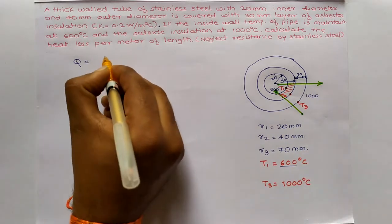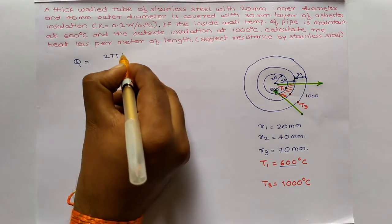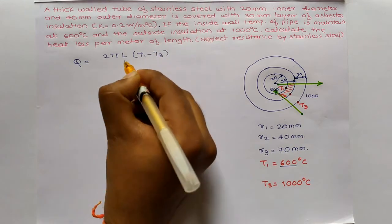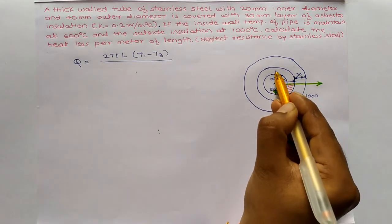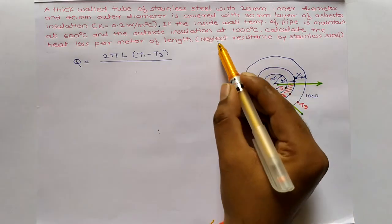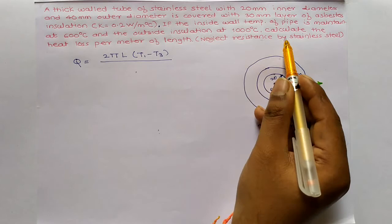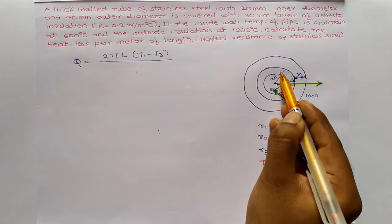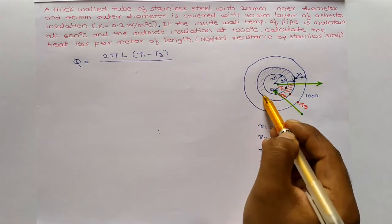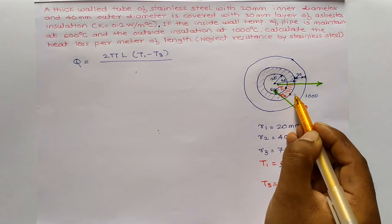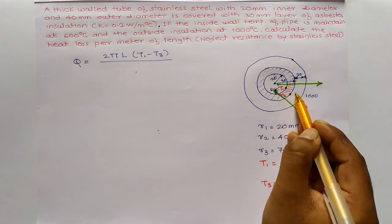Now, if I write the equation, it should be 2πL(T1-T3) divided by, for the first, stainless steel. And since they have given here, neglect resistance by stainless steel. I need not to take the resistance offered by stainless steel. So, I will take here, this only, for the layer, insulation layer, asbestos insulation layer.